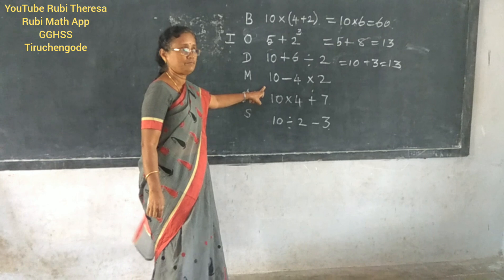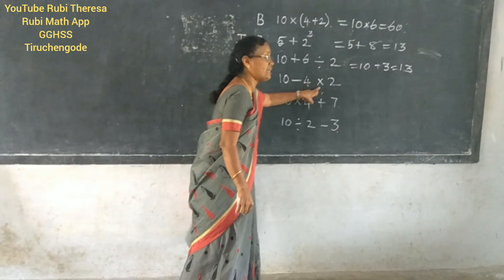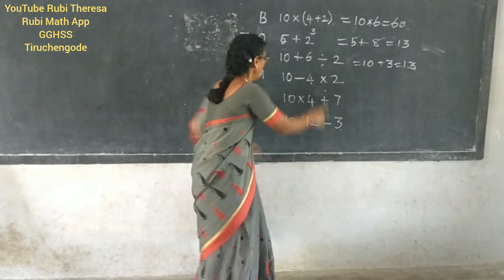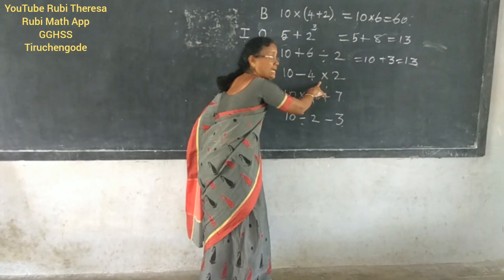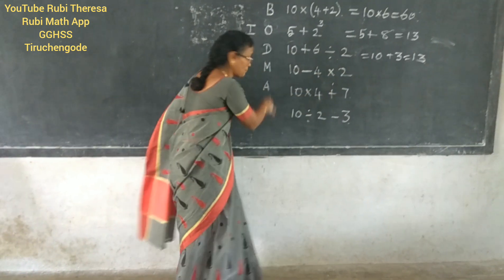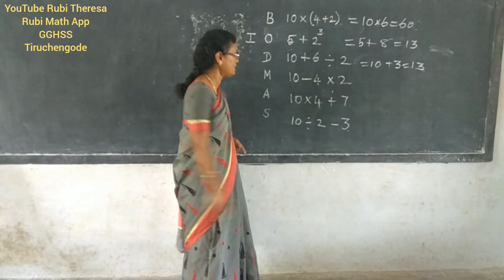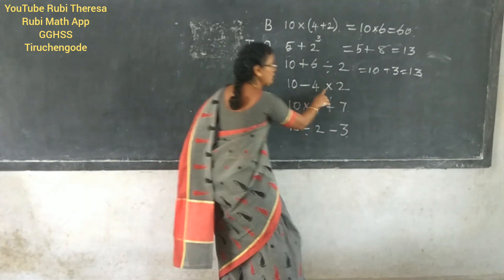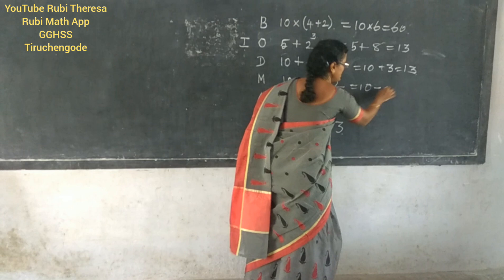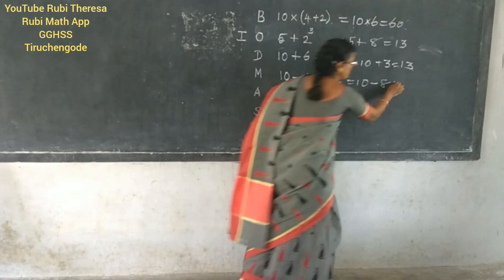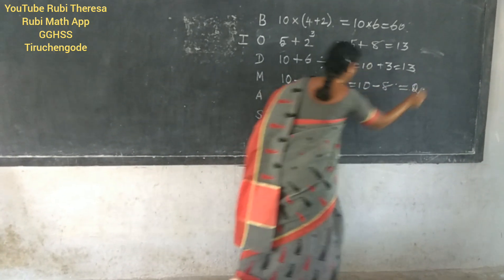Here: 10 minus 4 into 2. First, which one do you have to do? Multiplication — because subtraction is last in the order we are doing. So 10 minus 4 into 2, that is 10 minus 8 is 2.